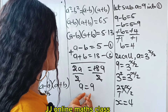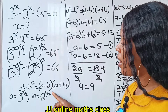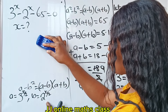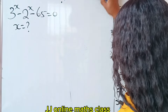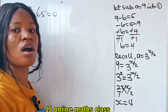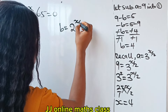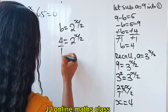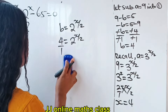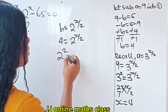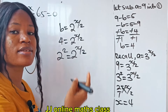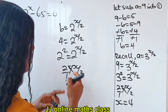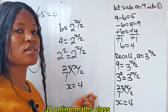Now let's verify using b. Our b is equal to 2 to the power of x over 2, and b equals 4. So 4 equals 2 to the power of x over 2. Writing 4 as 2 squared, we get 2 squared equals 2 to the power of x over 2. Equating the powers, 2 equals x over 2, so x equals 4 as well.